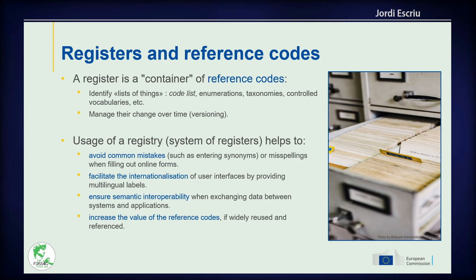Registries are useful in order to avoid common mistakes like entering synonyms of a concept or misspellings when filling out online forms or even XML files. They also facilitate the internationalization of user interfaces by providing multilingual support. Any of the descriptions of these items can be translated into different languages, and all these elements are registered as part of the database content. This is really useful to ensure semantic interoperability when exchanging data between systems and applications, and increases the value of these reference codes when they are widely used and referenced by the community.